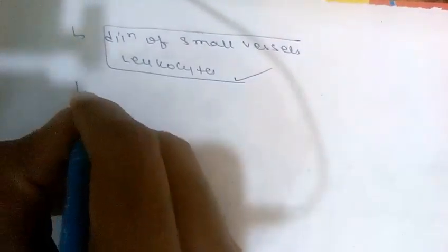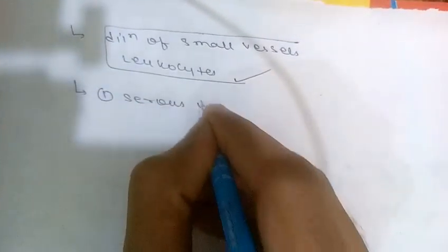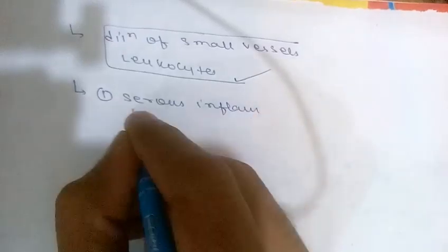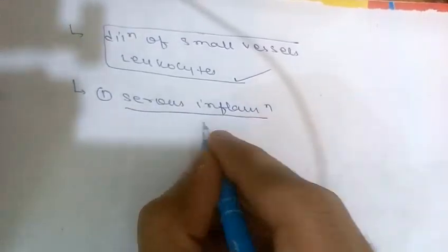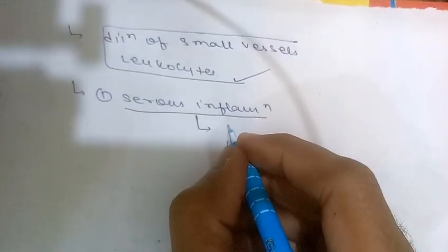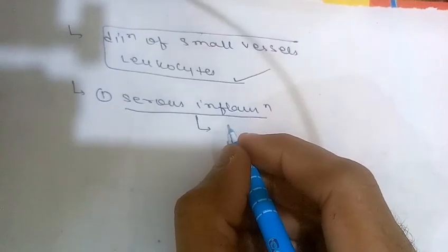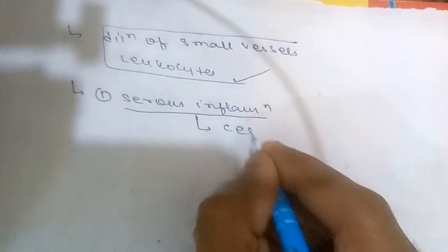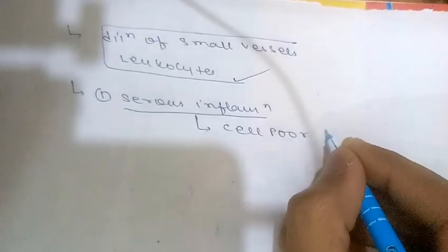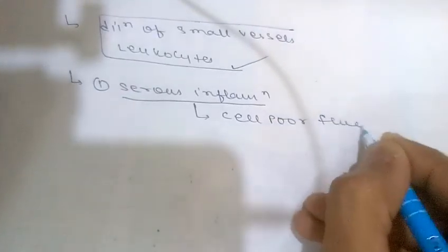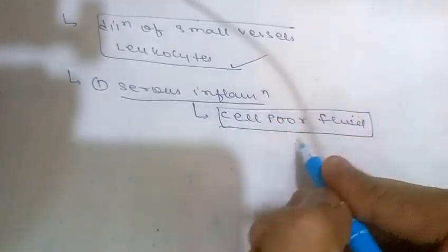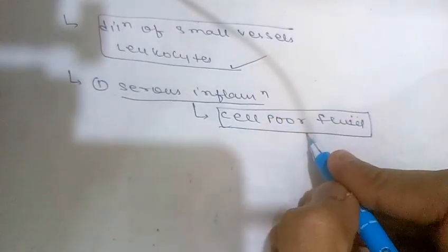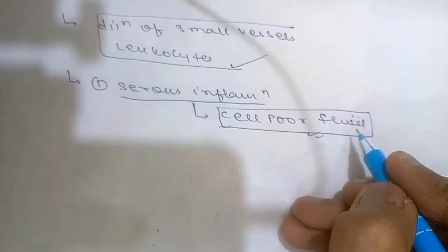The first type is serous inflammation. Serous inflammation is the exudation of cell-poor fluid into a space. Cell-poor fluid means there is a very small amount of cells found in that fluid which is coming out due to exudation.